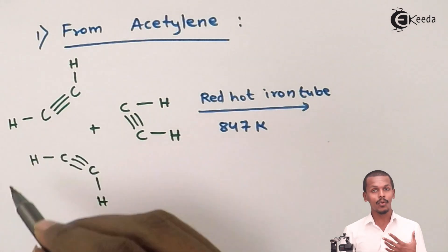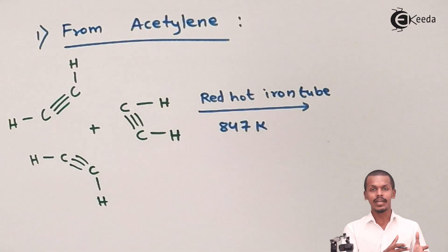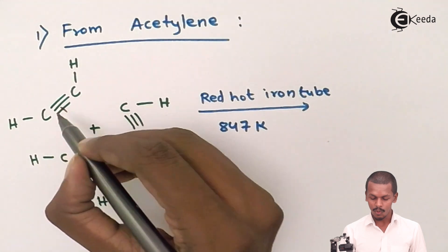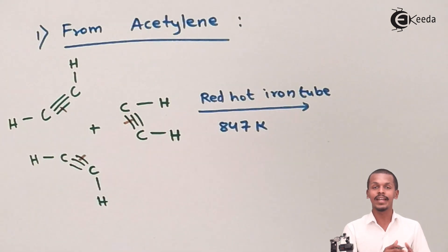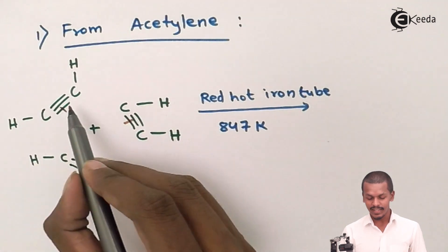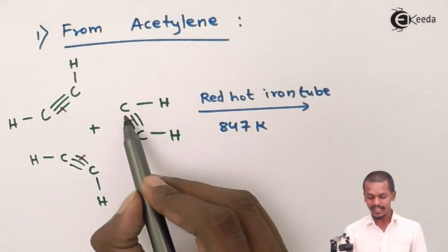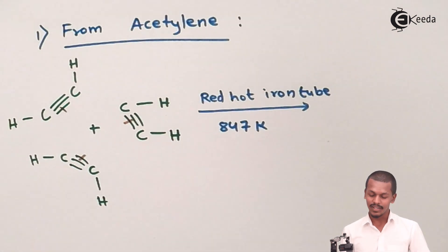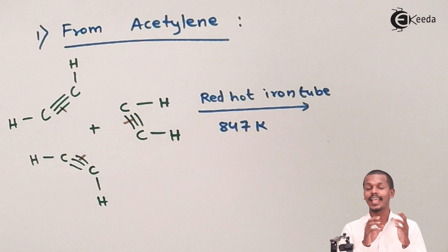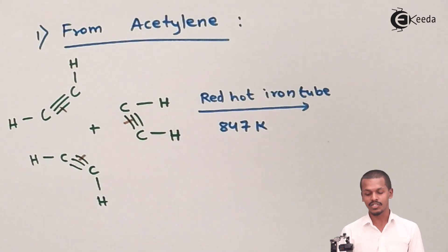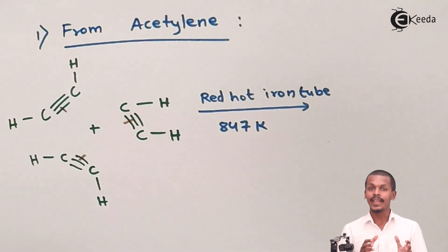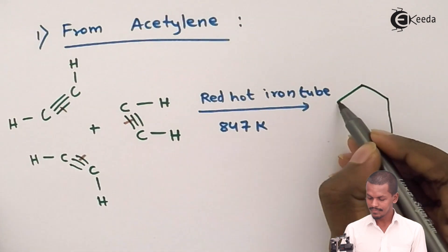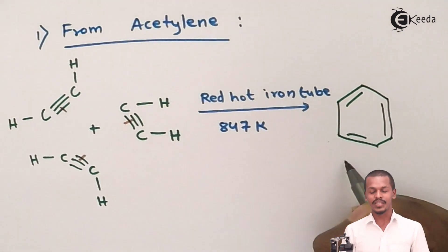The triple bond will convert into a double bond. The pi-electrons and pi-bonds are very loosely bonded and can be easily broken. Bond fission takes place in such a manner that we get alternate carbon-carbon single bonds and double bonds. The process continues so that we get a cyclic ring. For an alkyne, polymerization can be linear or cyclic, but in this particular condition, acetylene undergoes cyclic polymerization to form benzene.